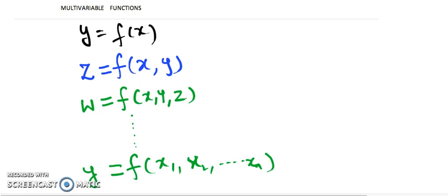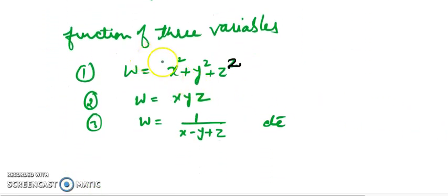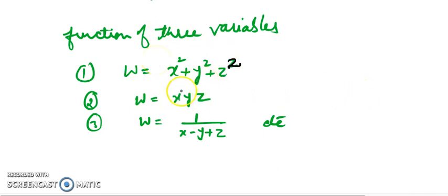Before proceeding, let's look at some examples of functions. For two-variable functions: z = 1/(x²+y²), z = x+y, and z = 1/(x²-y). You observe there are two variables in each expression. For three-variable functions, examples include w = x²+y², w = x·y·z, and w = 1/(x-y+z). These illustrate functions of two and three variables respectively.